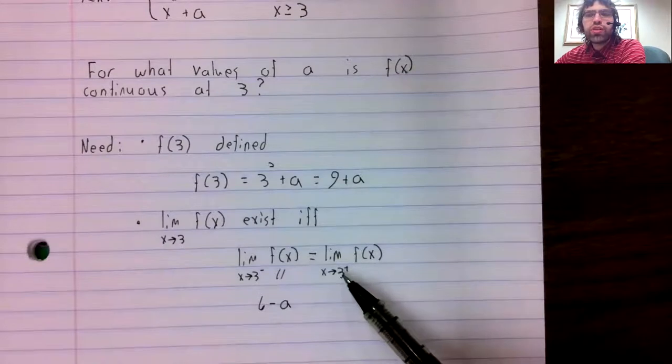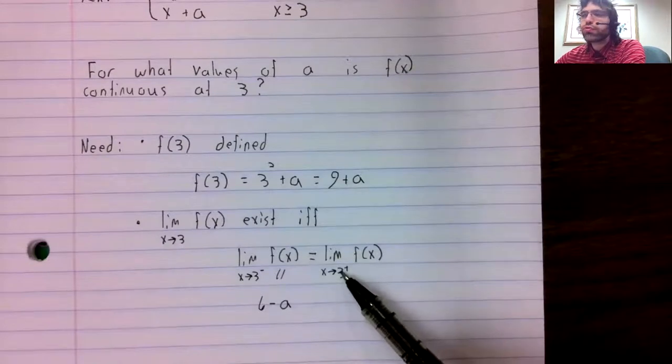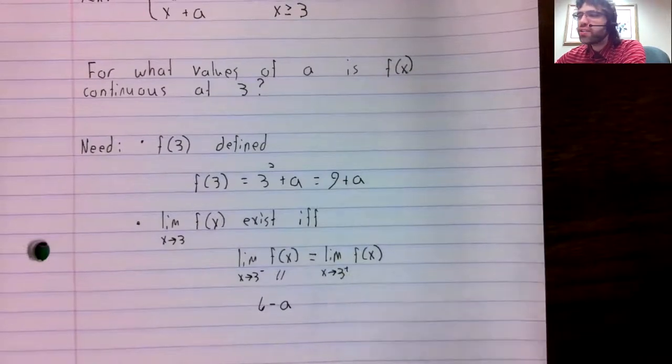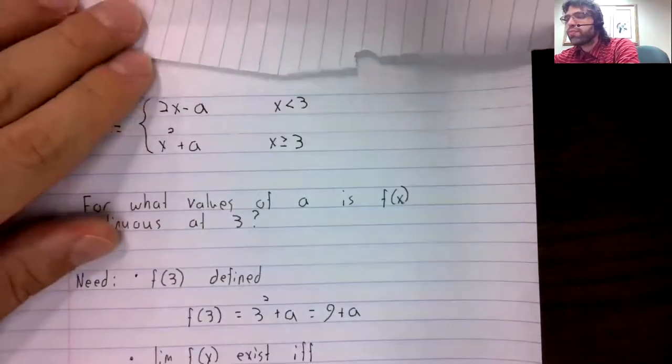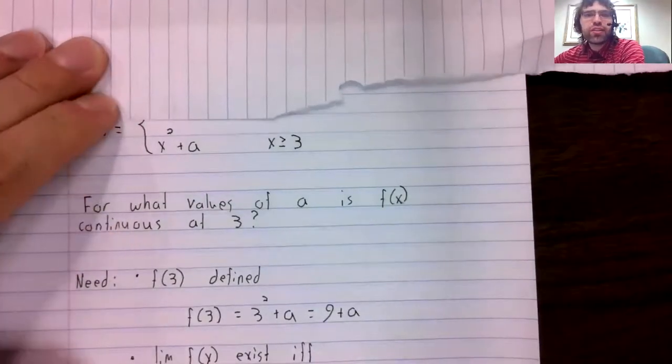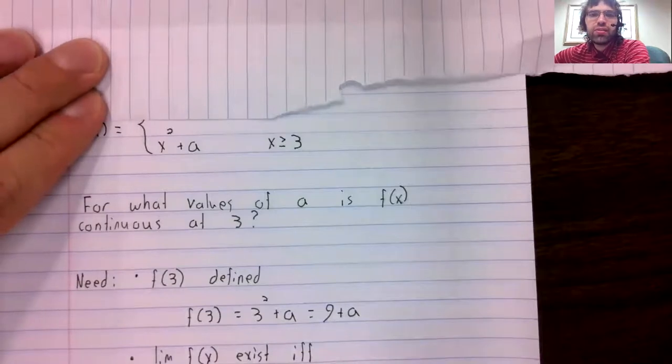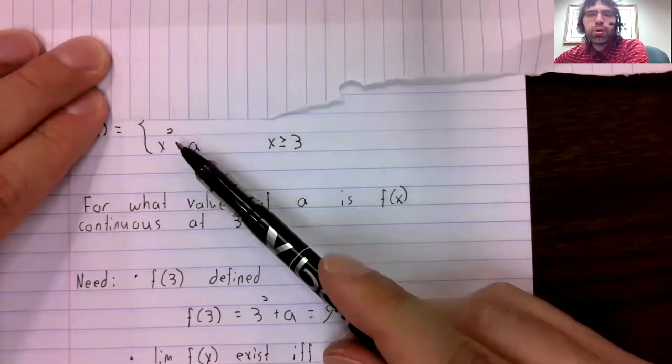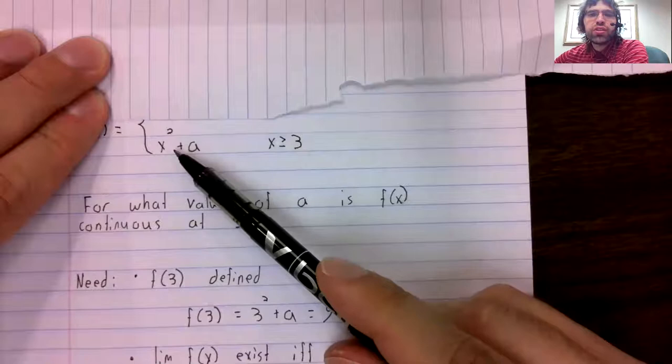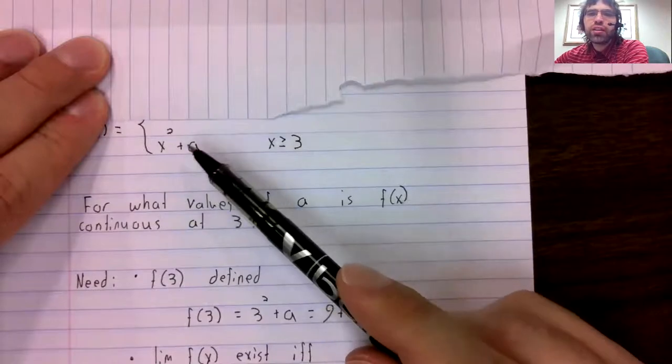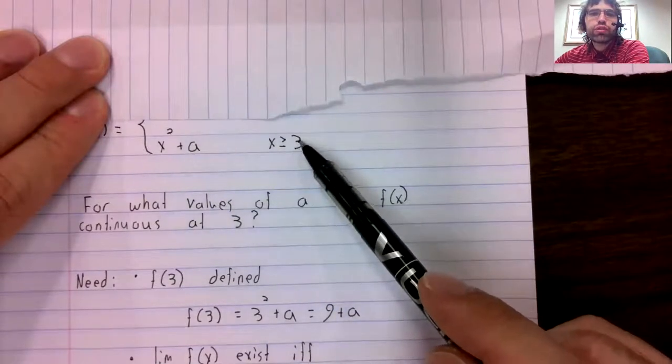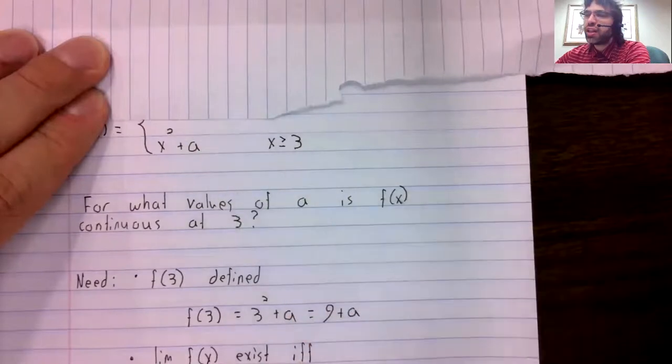What's the limit as we approach three from the right? Now if we approach three from the right, we're in this piece. And this is a polynomial, it's continuous. To find the limit, we'll just take three and stick it in there.